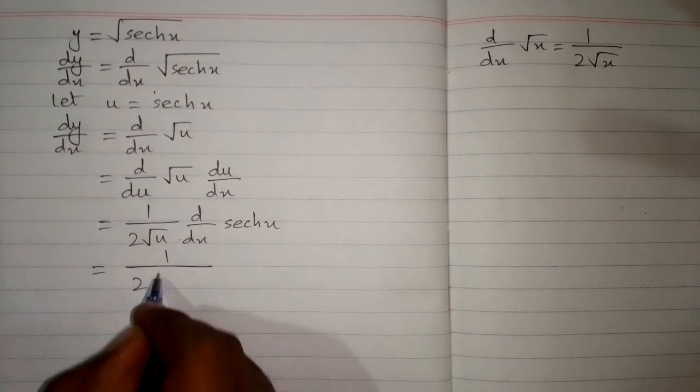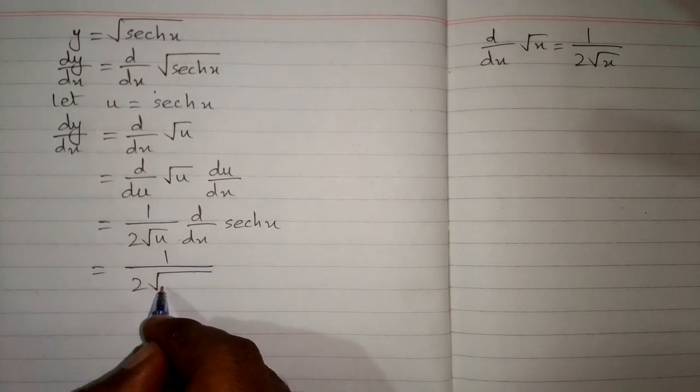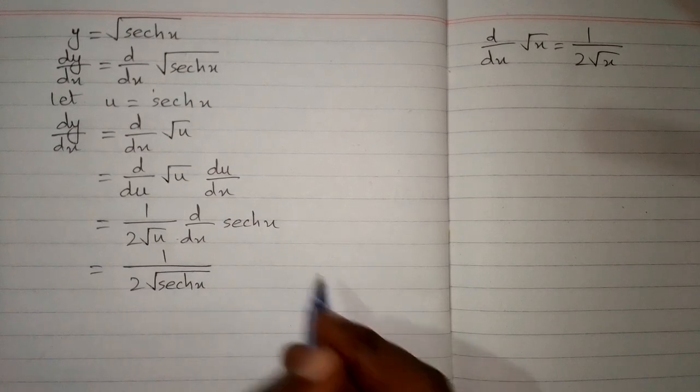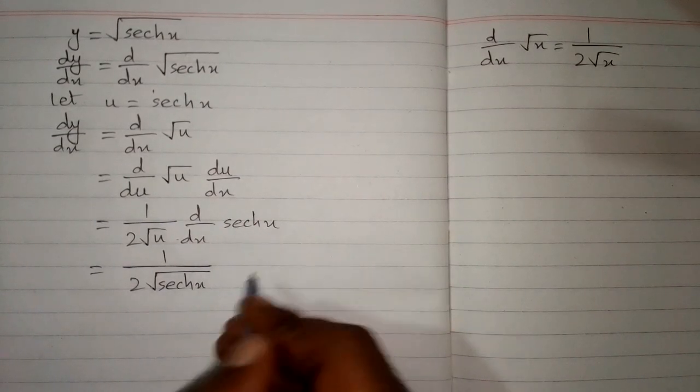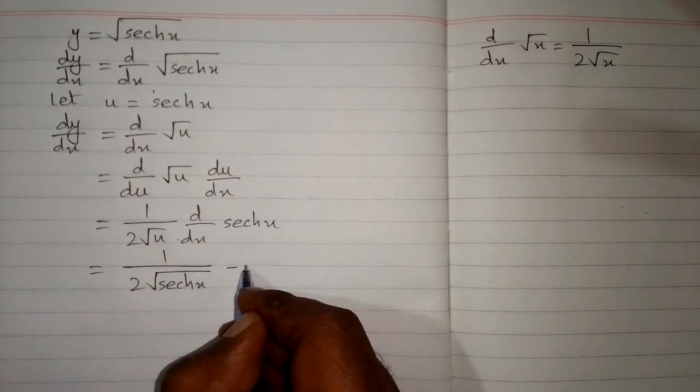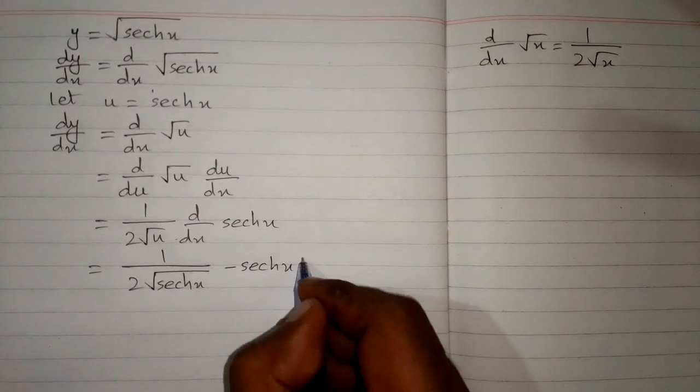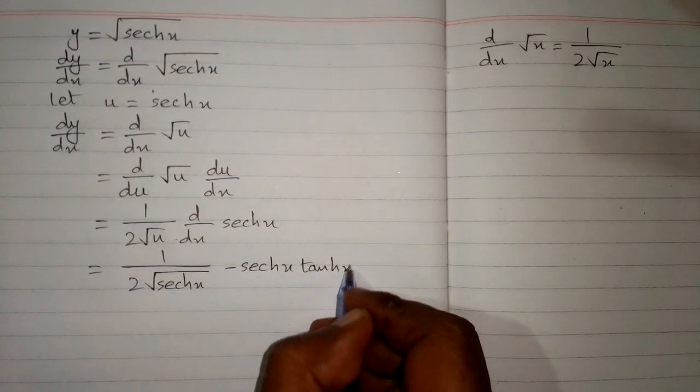Now we put the value of u which is hyperbolic secant x over here. And the derivative of hyperbolic secant x is minus hyperbolic secant x multiplied by hyperbolic tangent x.